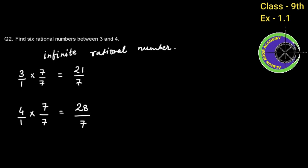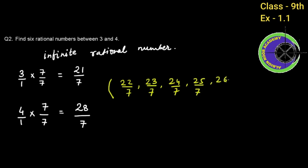So you can see we have 21 by 7 and 28 by 7 with the same denominator. The six rational numbers between 3 and 4 are: 22 by 7, 23 by 7, 24 by 7, 25 by 7, 26 by 7, and 27 by 7. This is your NCERT book solution.